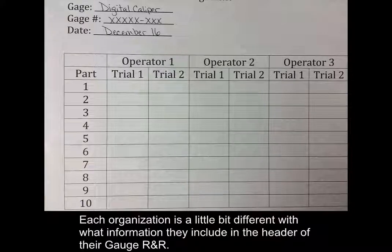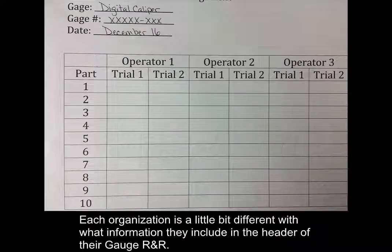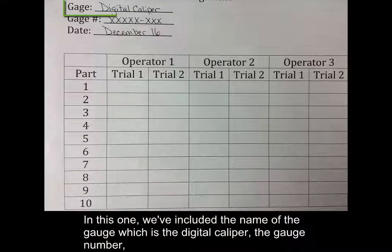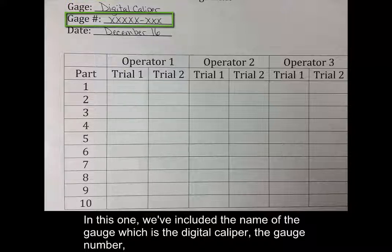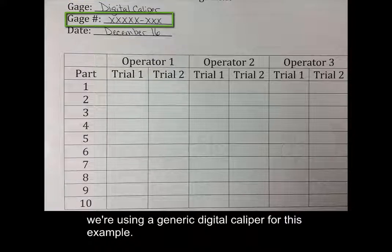Each organization is a little bit different with what information they include in the header of their gauge R&R. In this one, we've included the name of the gauge, which is a digital caliper, the gauge number. If we're using a generic digital caliper for this example, it typically has a 5-digit number.